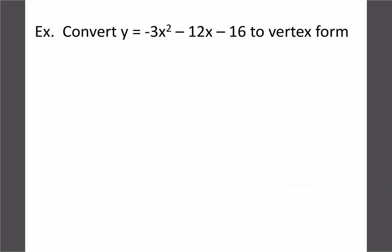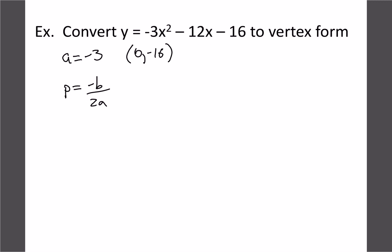Let's try another example using the same method. Here a is negative 3, and our y-intercept is negative 16, giving coordinate (0, -16). We need to solve for p using negative b over 2a: that's negative of negative 12, so positive 12, over 2 times negative 3. That gives 12 divided by negative 6, which is negative 2. So we have our p value; the only thing left is q.